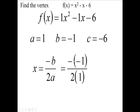I'm going to replace this with a 1 here. The opposite of minus 1 is going to be 1, and 2 times 1 for the denominator is just 2. So the x value of the vertex is 1 half. Now I have to do f of this, f of 1 half.